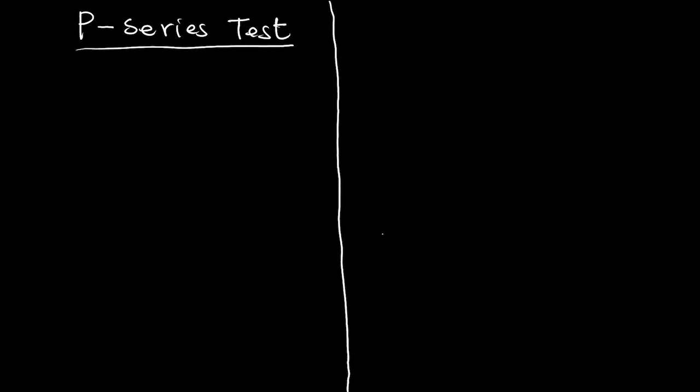In these tutorials we are going to talk about the P-series test. A P-series is of the form: summation as n starts from k to infinity of 1 over n to the power p, where k is greater than zero. So the starting index for a P-series must be greater than zero — it cannot be zero or less than zero. This is the typical form of a P-series.